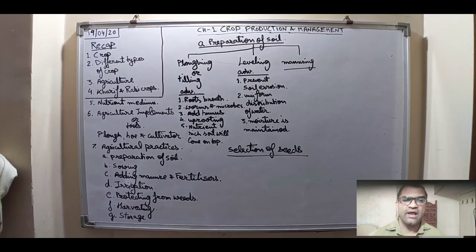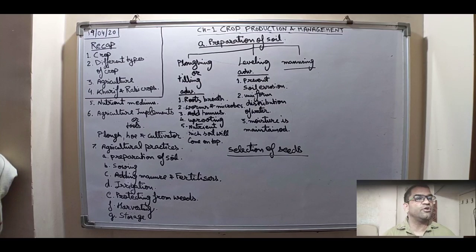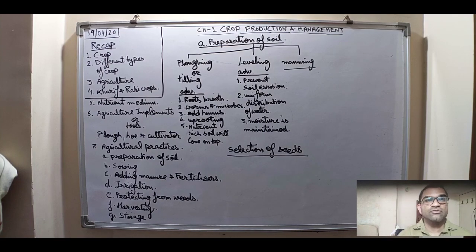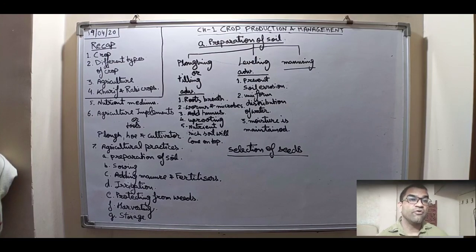Agriculture is a branch of science which deals with the cultivation of crops and rearing of animals, which are very helpful to us. In today's session, we are going to start with the nutrient medium — the medium from which plants get their nutrients.